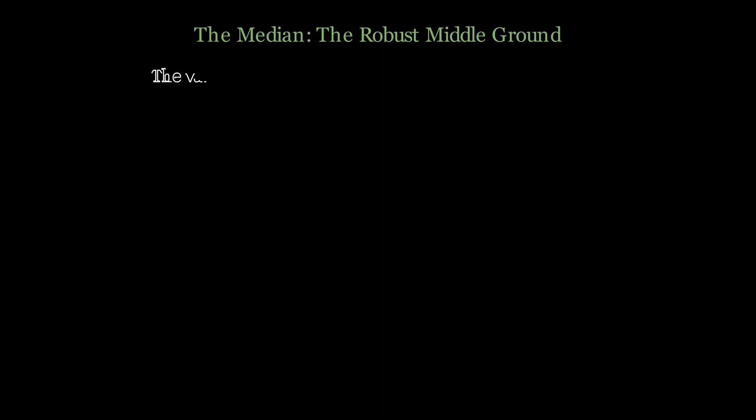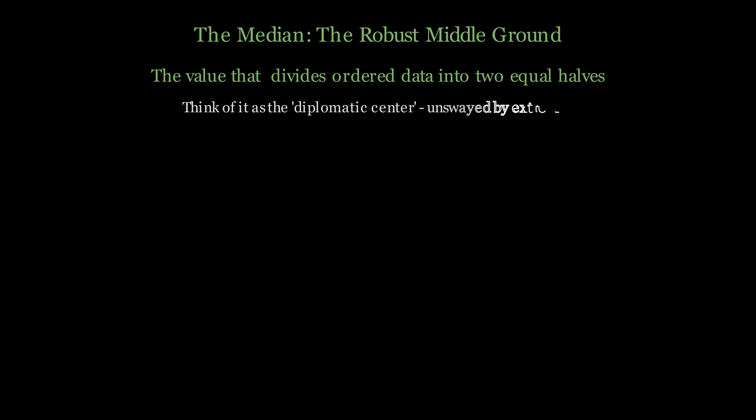The median represents a fundamentally different approach to finding the center. Instead of using mathematical averaging, the median is purely positional—it's the value that sits exactly in the middle when we arrange our data from smallest to largest. Think of the median as the diplomatic center—it doesn't get swayed by extreme voices but represents the true middle ground. This positional nature makes it incredibly robust against outliers.